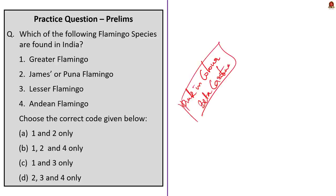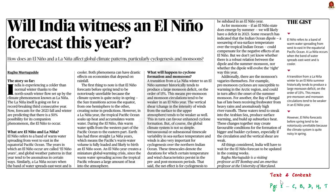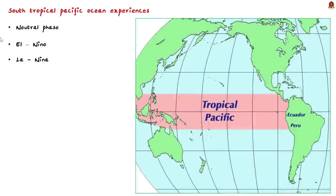This news article deals with the phenomenon of El Niño and La Niña and the current status of weather patterns in the Pacific and Indian Ocean. There are three phases of variation of ocean temperatures in the tropical Pacific Ocean: the first phase is called neutral, while the other two phases are called El Niño and La Niña. In the neutral phase, there is an accumulation of warm water in the western part of the Pacific Ocean.